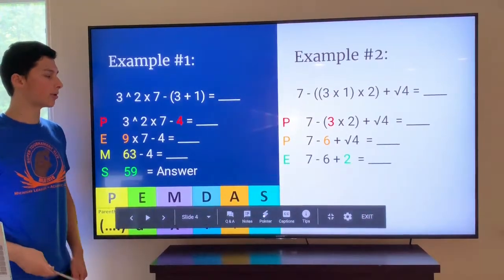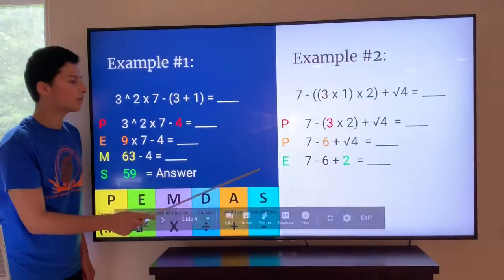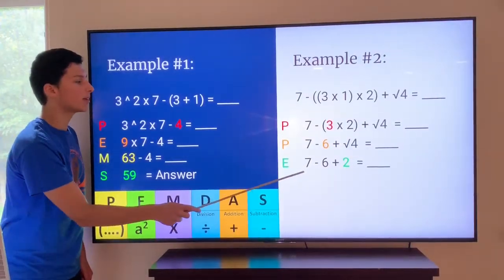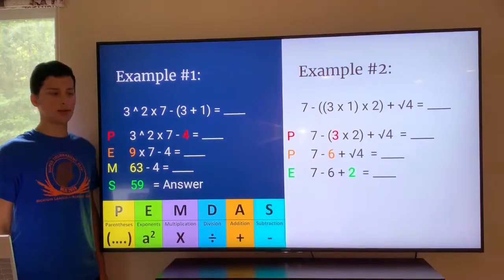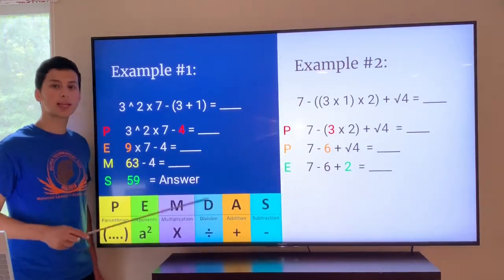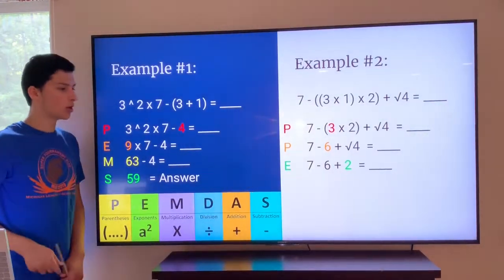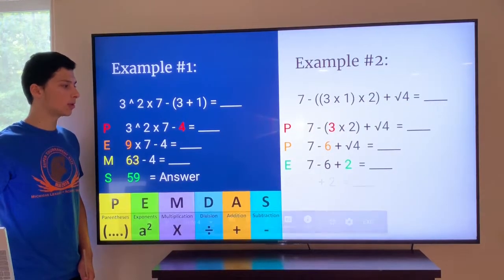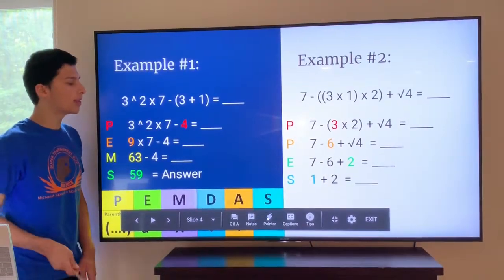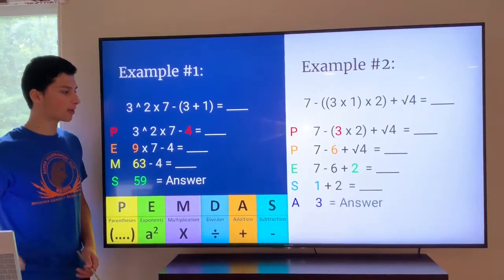Now we move on to exponent, which includes the square root. The square root of four is two. So now we're left to seven minus six plus two. Now, since we have subtraction and addition, they're on the same level of PEMDAS, so we would move from left to right. So we would do seven minus six first, which is one, and then we would add two to that, which is three, and the answer is three.